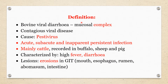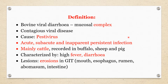Let us understand the simple definition of BVD-MD. Bovine Viral Diarrhea and Mucosal Disease complex — now called BVD-MD complex — is a contagious viral disease caused by Pestivirus. It produces acute, subacute, and inapparent persistent forms. The acute and subacute manifestations are the manifestation of bovine viral diarrhea, and the inapparent persistent infection manifests as mucosal disease.